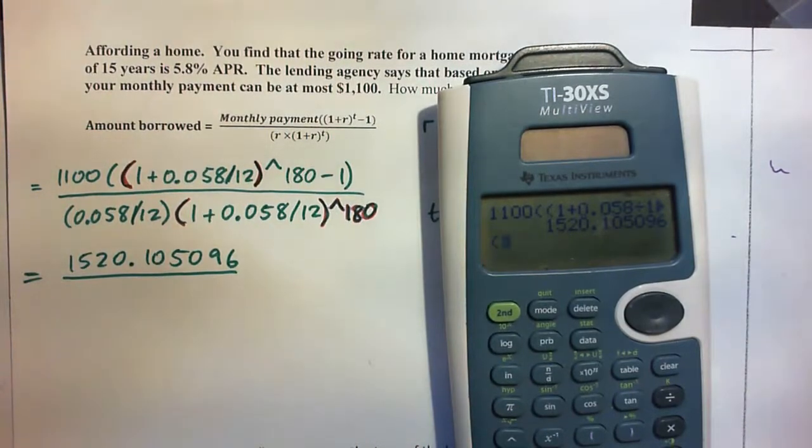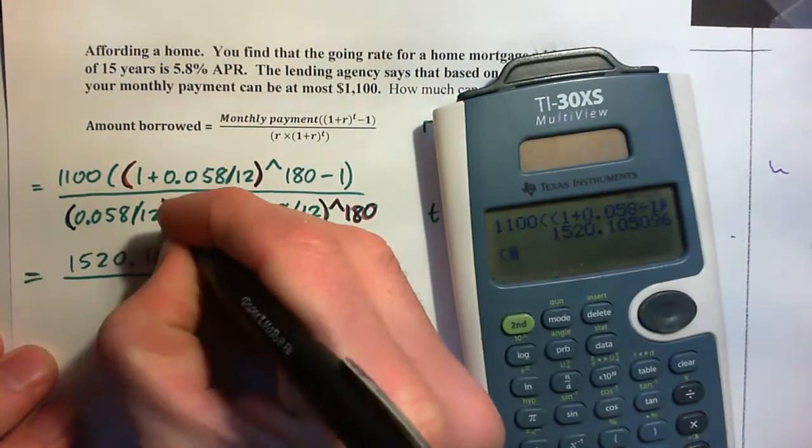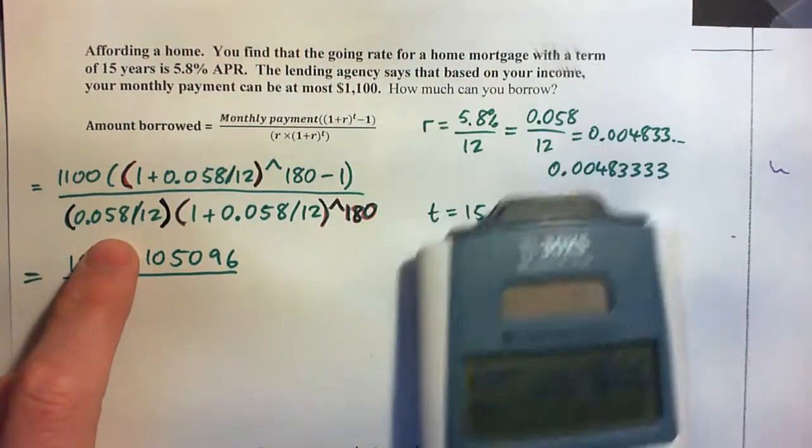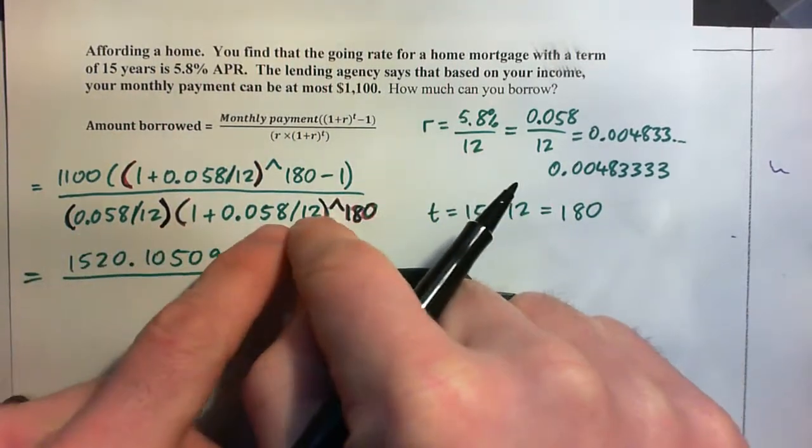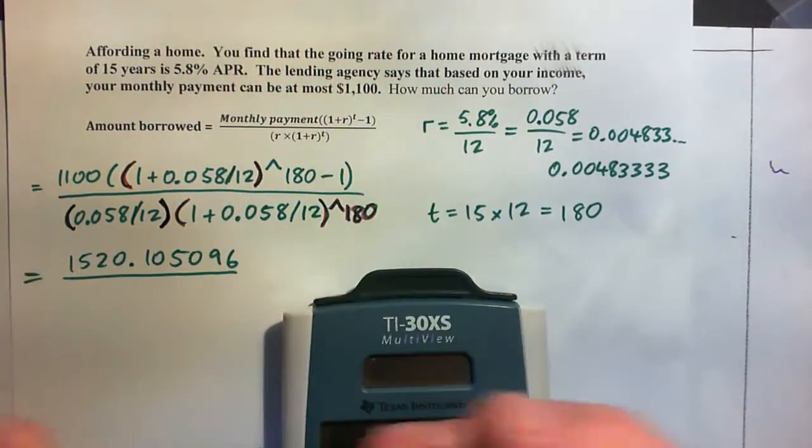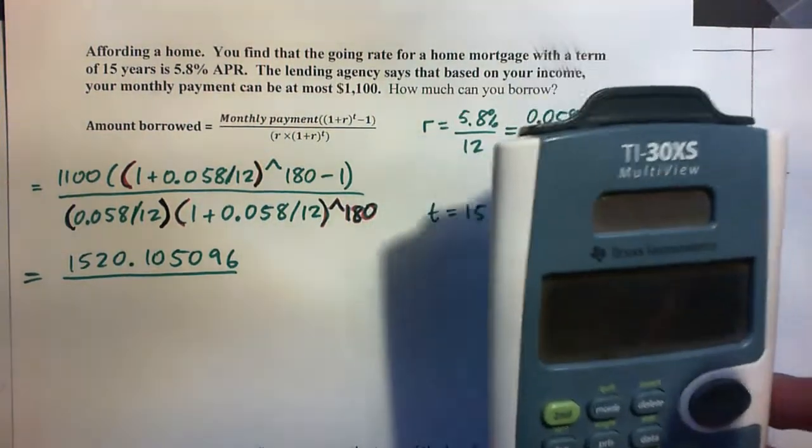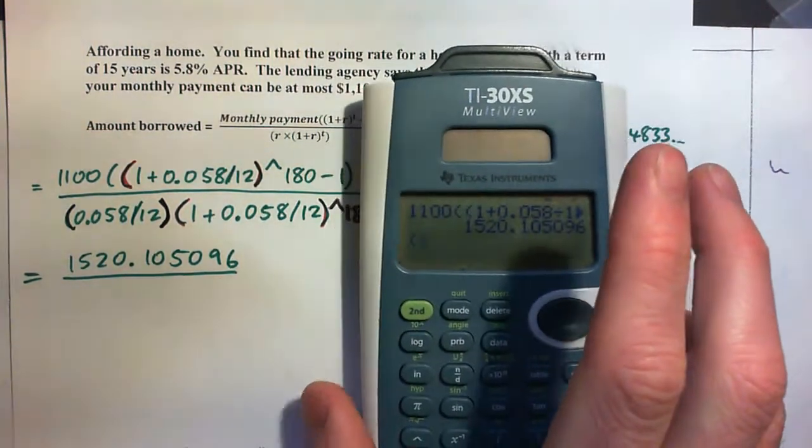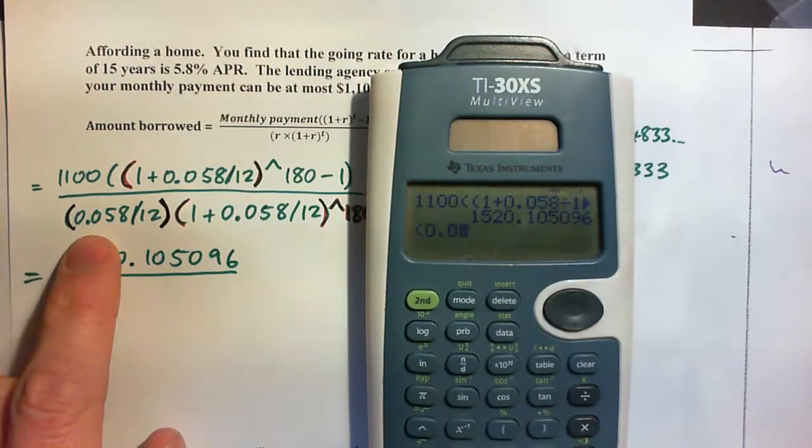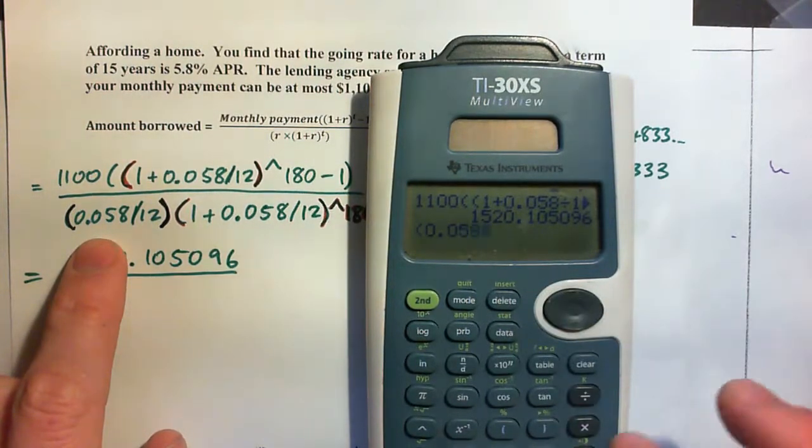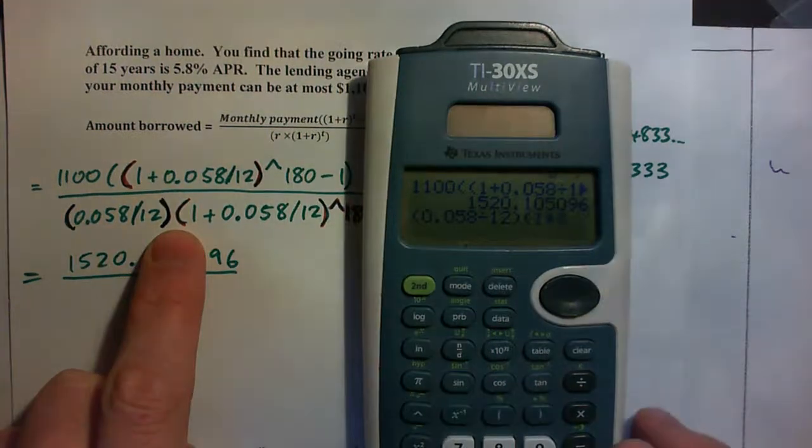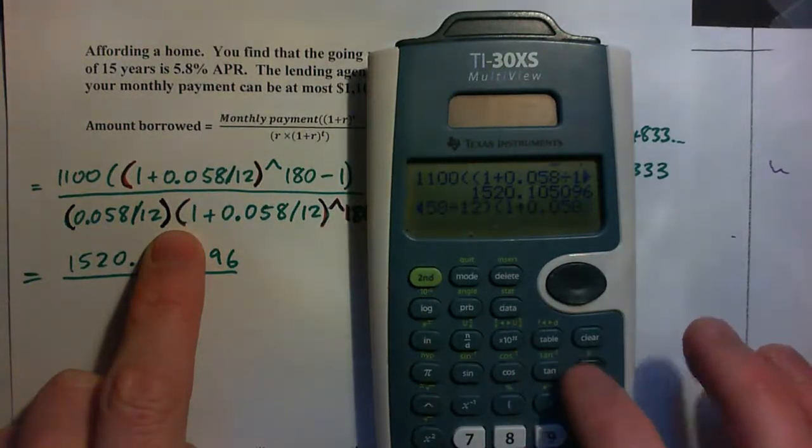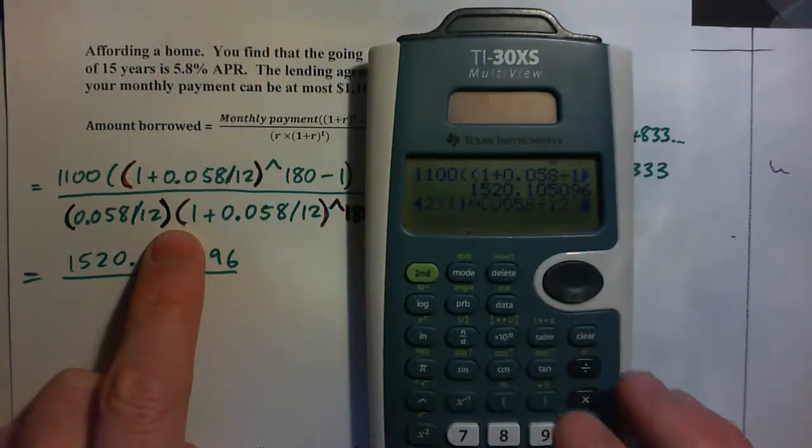But I'm just going to put them in because for our own minds I think it just makes sense that we're telling the calculator to please calculate this first so that we get what R actually is, our 0.004833323, and then calculate all this and then multiply the two together because that's what we want the calculator to do. So, parentheses 0.058 over 12, close parenthesis, parenthesis 1 plus 0.058 over 12, parenthesis to the power of 180.